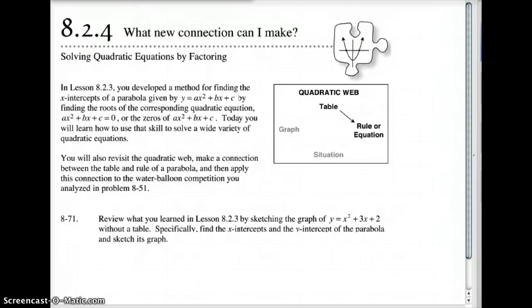Welcome to lesson 8.2.4. Today we're solving quadratic equations by factoring. What we're really doing here is taking those equations and rules. We're going to review how to factor those out to get the zero property products from that. But then we're going to take a table and work it backwards to find the rule or the equation and learn how to do that.